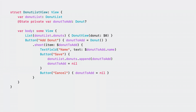Starting off with @State. When the view needs to have its own state stored in a model, use the @State property wrapper. Here, we have the Observable model object Donut being used in a sheet presentation.